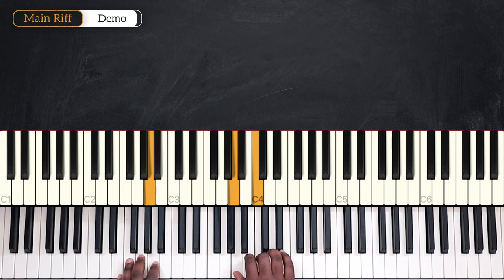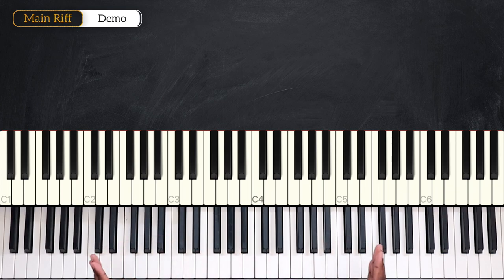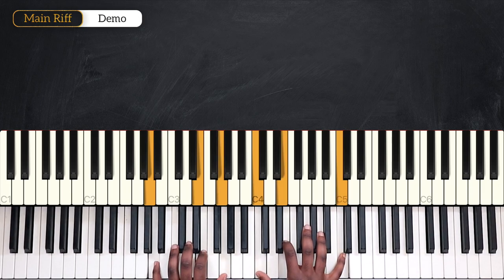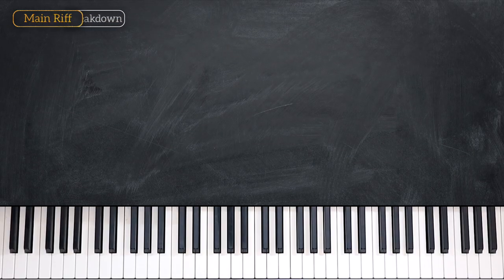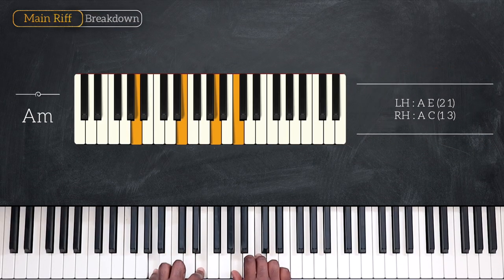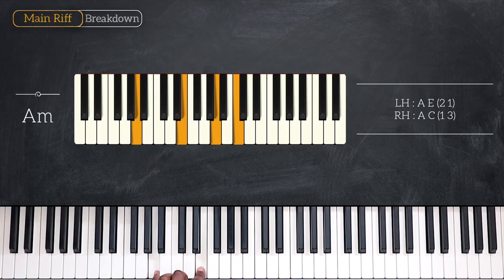What I just played was the main riff that we're going to use pretty much for the entire song. We're playing in the key of A minor and starting this main riff we have A minor, so the one chord, playing A and E on the left, A and C for the right hand.